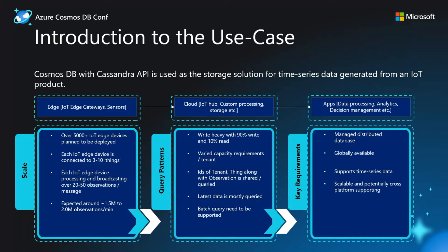To introduce you to the use case, we have used Cosmos Database with Cassandra API as a storage solution for a time series database for one of the largest IoT product implementations. In a typical IoT implementation, you have what you call an edge area, which largely deals with the IoT edge gateways and sensors connected and deployed on the field. Then you have the cloud area where data from these edge devices is consumed, processed, and stored. And then the app section where stored data is further processed to make certain decisions and drive implementations.